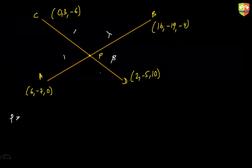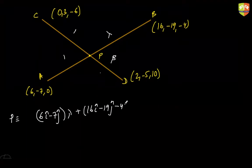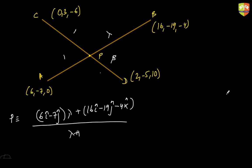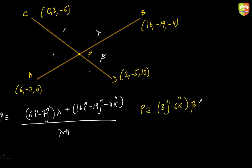If P divides AB in ratio λ:1, the position vector of P is (λ times (6i - 7j) + (16i - 19j - 4k)) divided by (λ + 1). The same point P, taking CD, will have position vector (β times (3j - 6k) + (2i - 5j + 10k)) divided by (β + 1).